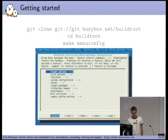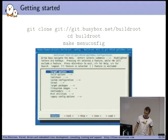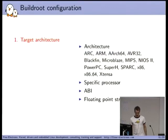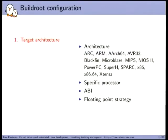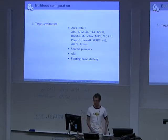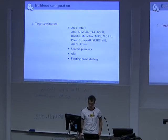To get started with BuildRoot, you just grab it from the Git repo — there are stable releases but the Git repo is easiest — and then fire up `make menuconfig`. You get the well-known menuconfig interface to configure all aspects of the embedded Linux system you're going to produce. First, you select the architecture: ARM64, SuperH, NIOS2, and all the more common ones are supported, along with architecture-specific options like processor type and floating-point strategy.